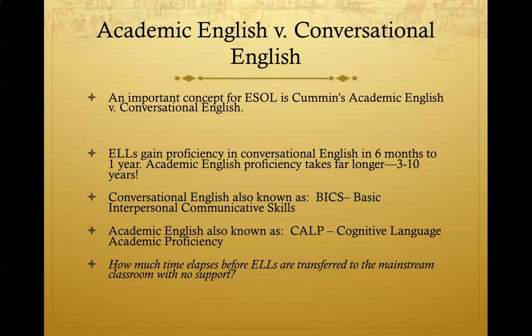As you read in Chapter 2 this week, you will see the acronyms BICS and CALP. There's a difference between the social language — BICS, which is Basic Interpersonal Communication Skills — and Academic Language — CALP, Cognitive Academic Language Proficiency. Many times, students seem very fluent but have not developed the academic vocabulary needed to be successful. Think about this question: in your school, how much time elapses before an ELL is in the mainstream classroom with no support? That's why we need all teachers to be aware of the second language acquisition process.